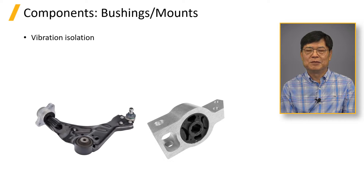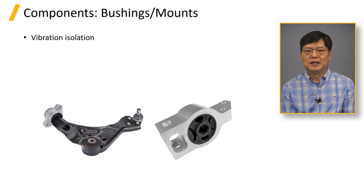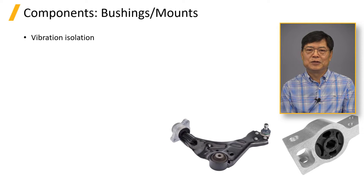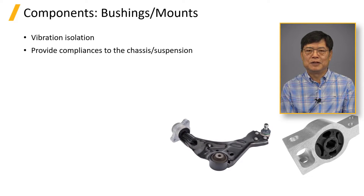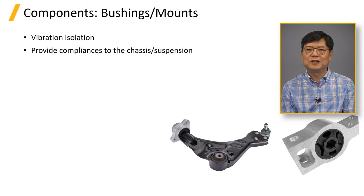Bushings and mounts isolate vibration from external load. They also provide and distribute compliances. Suspension links, arms, and chassis structures are connected by bushings.